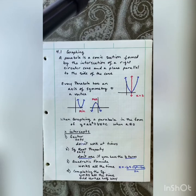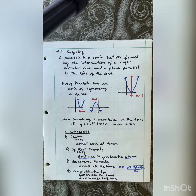Good morning. Today we are doing 4.1, which is on graphing, and we are going to be graphing parabolas at first. A parabola is a conic section formed by an intersection of a right circular cone and a plane parallel to the side of the cone.